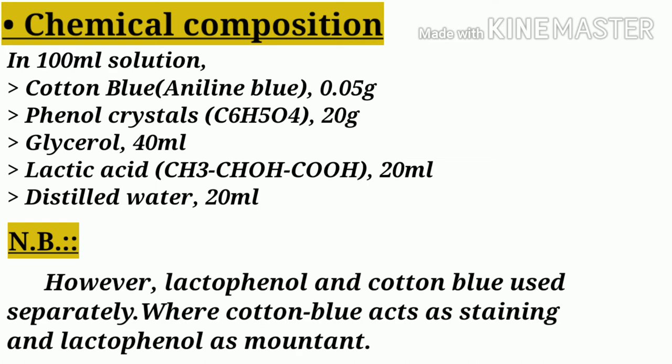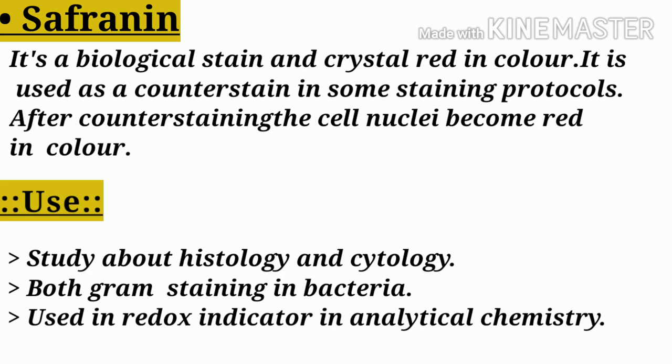The second important staining solution is safranin. Safranin is a biological stain and is crystal red in color. It is used as a counter stain in some staining protocols, and after staining, the cell nuclei become red in color. It is used in the study of histology and cytology.